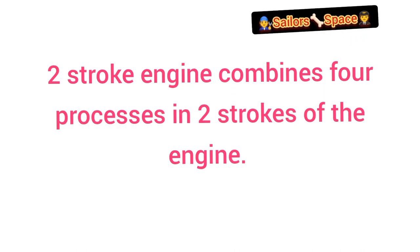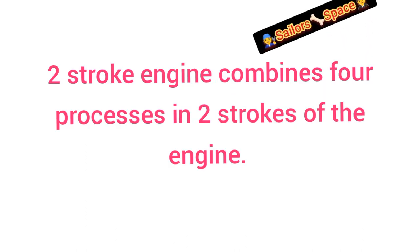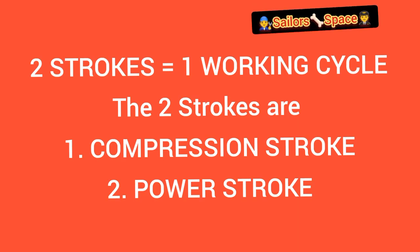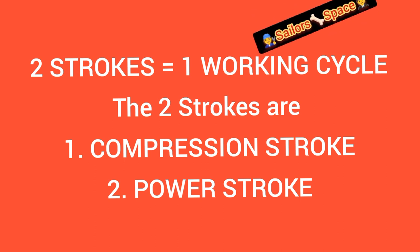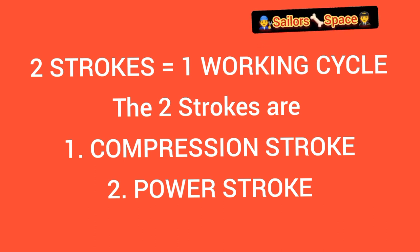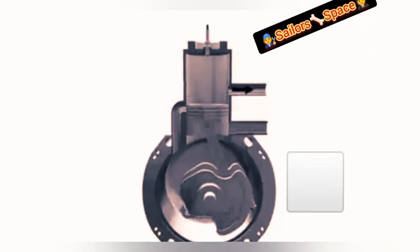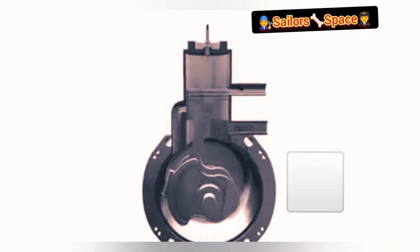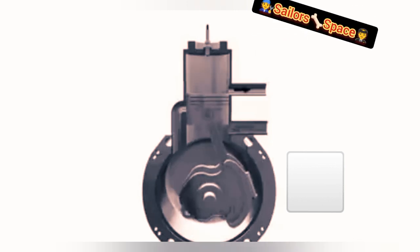Now we are going to take up the working principle of a two-stroke engine. Four processes happen in two strokes — unlike the four-stroke engine where four processes happen in four strokes. In two-stroke engines we have basically two strokes: the compression stroke and the power stroke, making one working cycle — that's one revolution of the engine crankshaft.